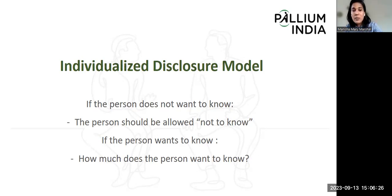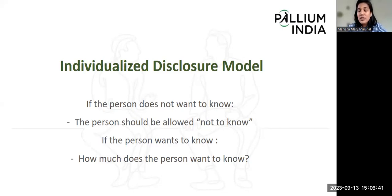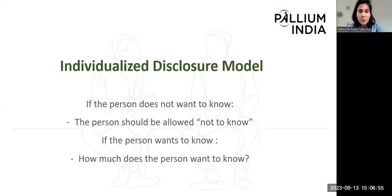When communicating bad news, we do not just spill out the whole information to the patient at once. We make sure we understand how much the person wants to know. For example, if we start communicating and tell the patient it seems like a tumor, and the patient's non-verbal cues suggest they don't want to know more, or if the patient says directly 'I do not want to know anymore,' then we as professionals must listen and ensure the information is not disclosed beyond what they want to know.